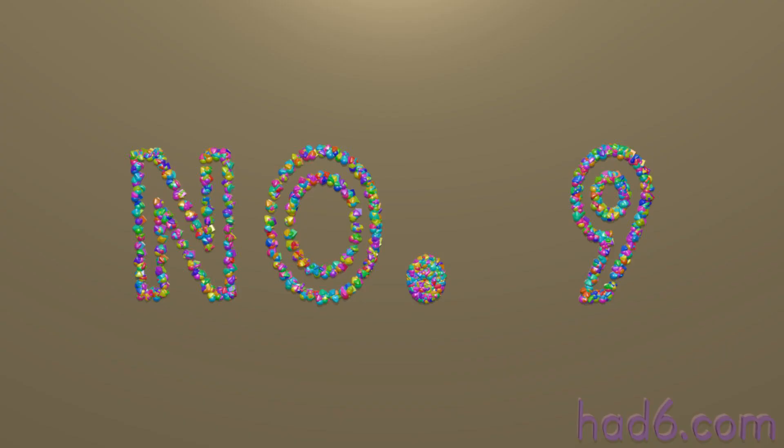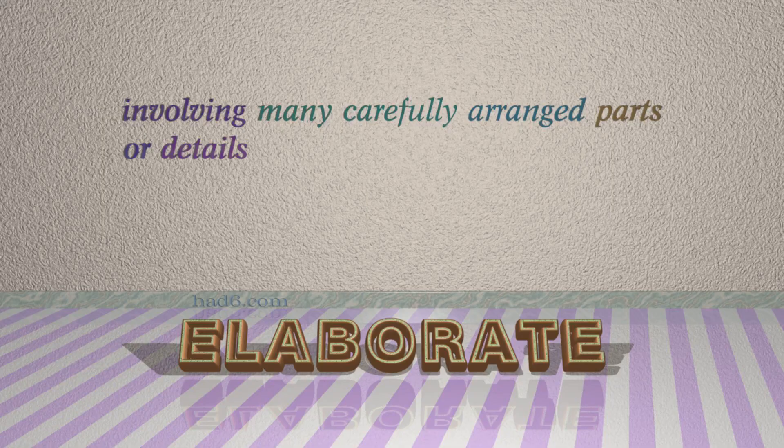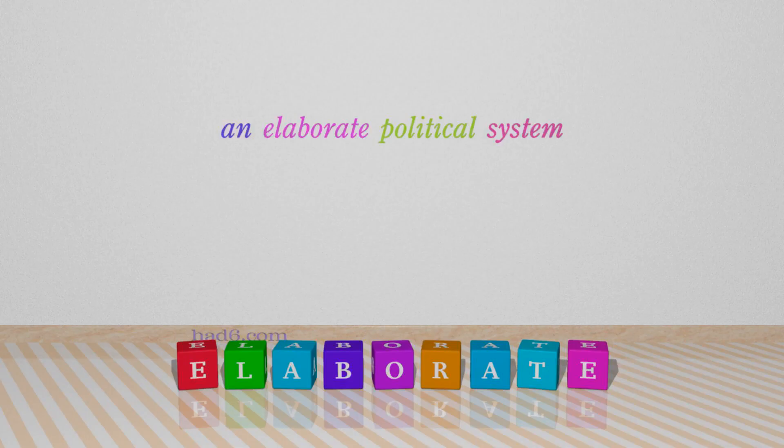Number 9: Elaborate. Which means involving many carefully arranged parts or details. For example: an elaborate political system.